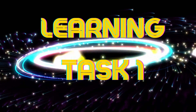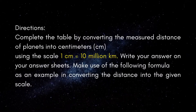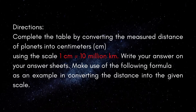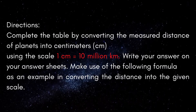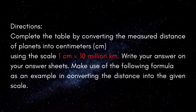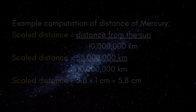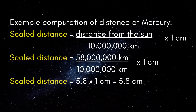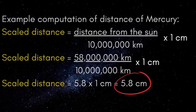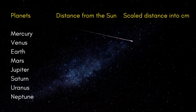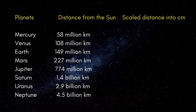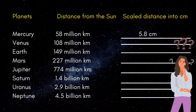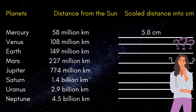We are ready for Learning Task 1. Complete the table by converting the measured distance of planets into centimeters using the scale: 1 centimeter equals 10 million kilometers. Write your answers on your answer sheets. Use the following formula as shown in the example for Mercury: scale distance equals distance from the sun divided by 10 million kilometers, times 1 centimeter. That gives us 5.8 centimeters as the example answer.